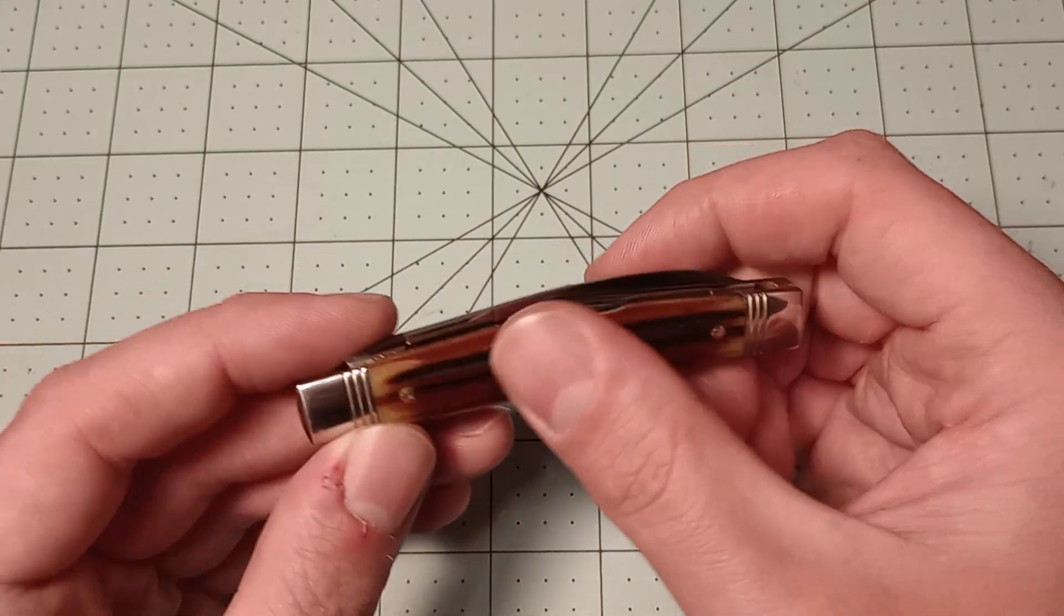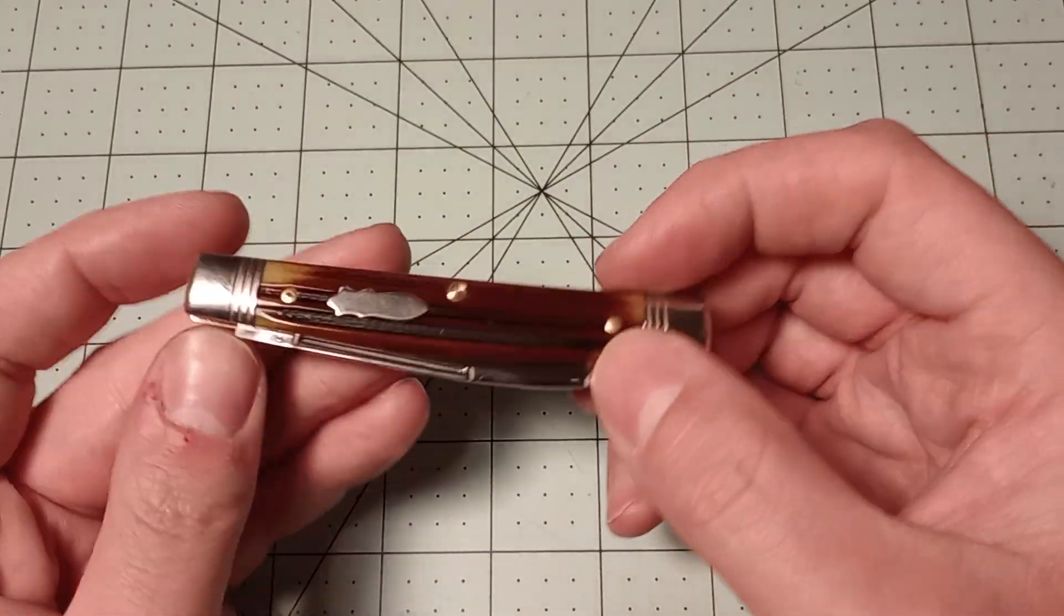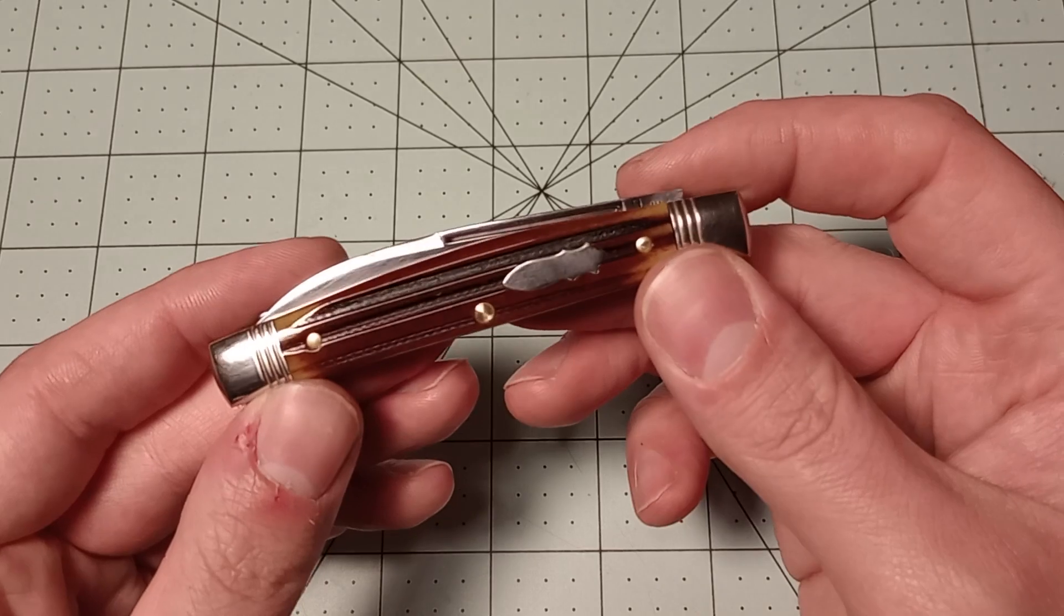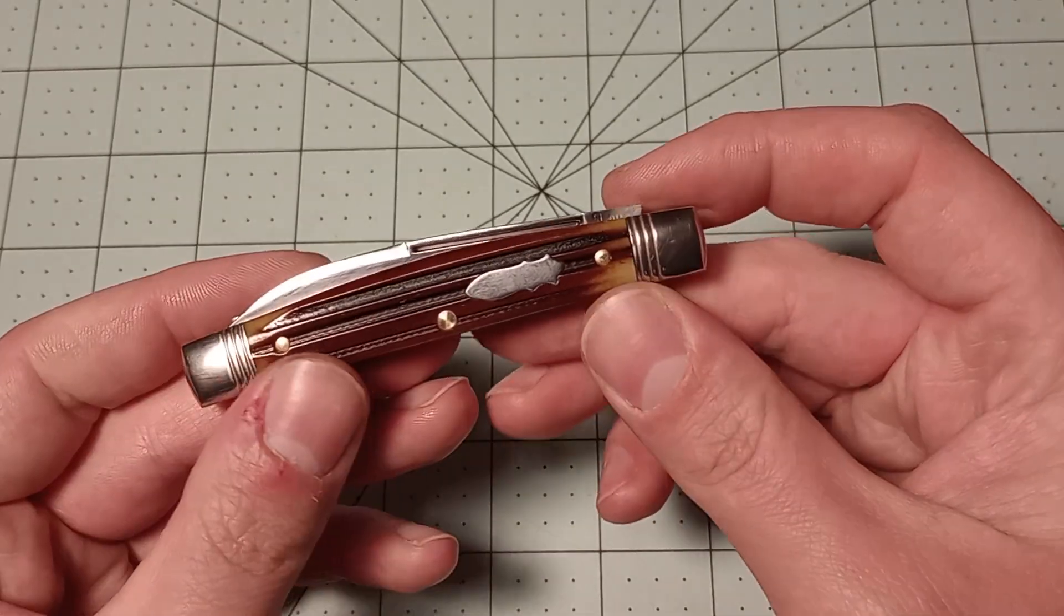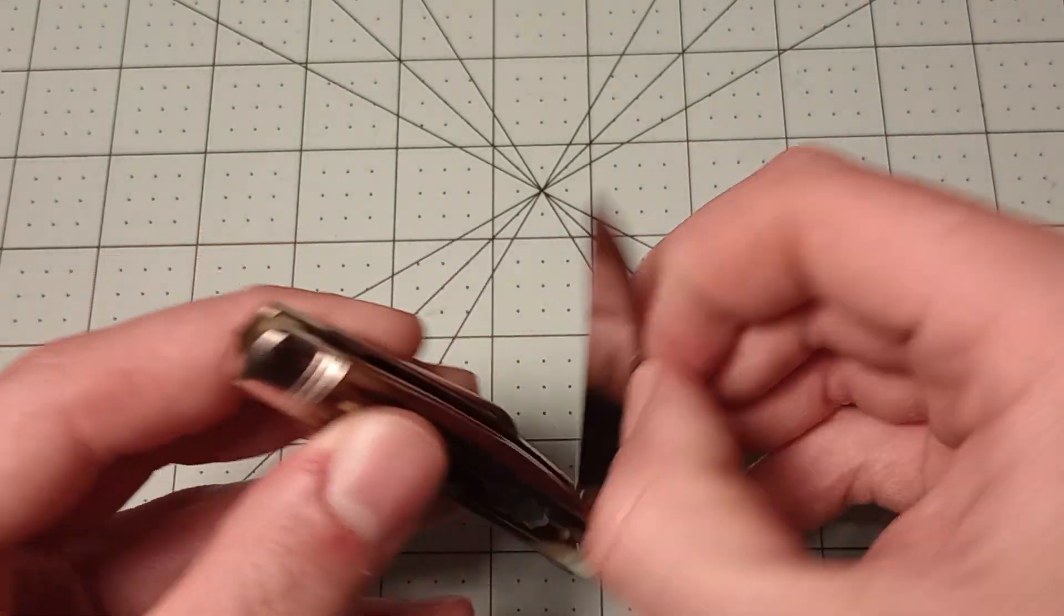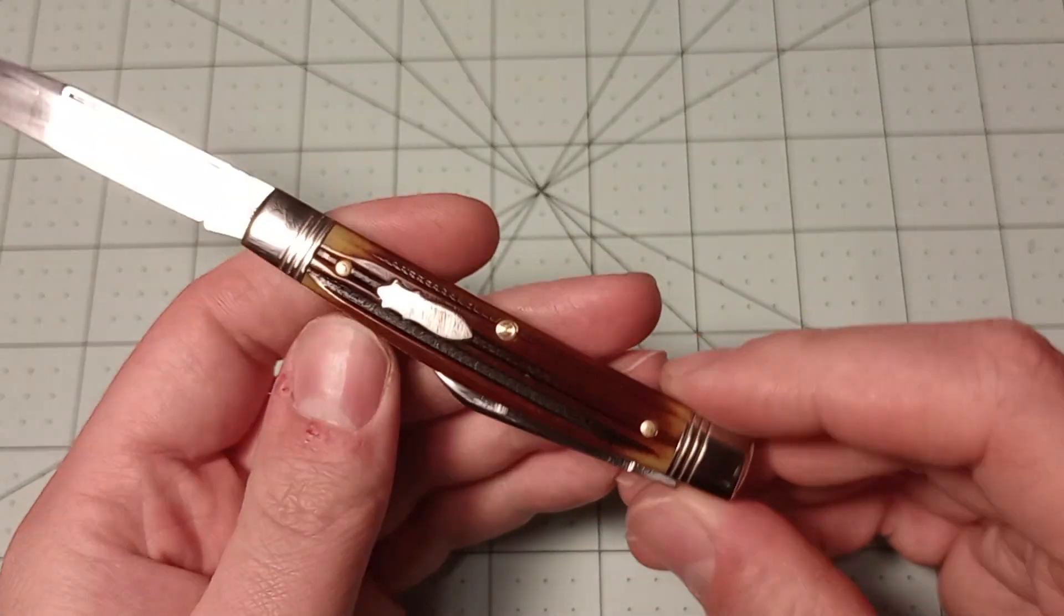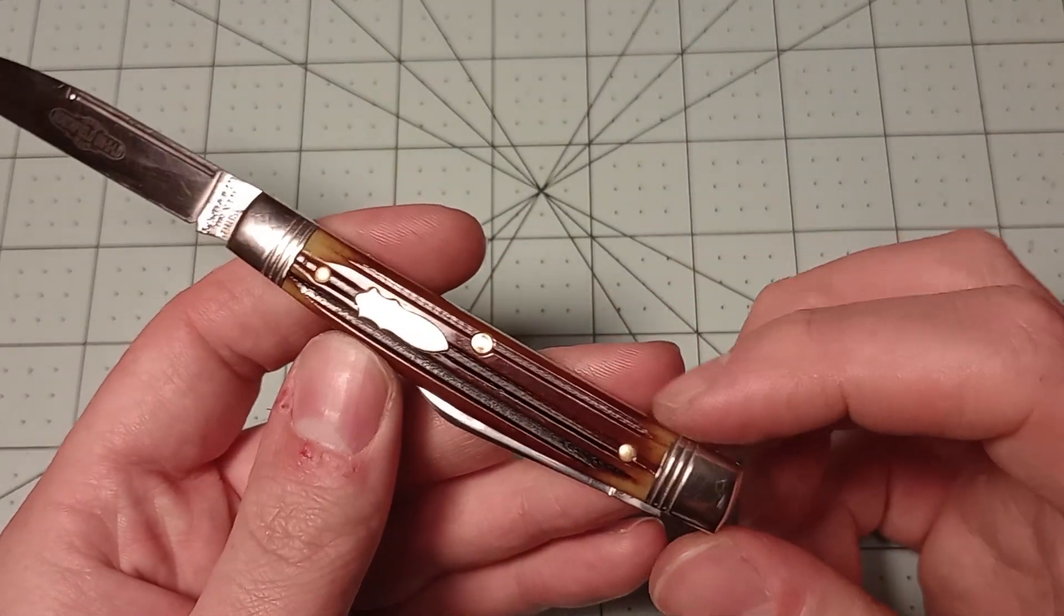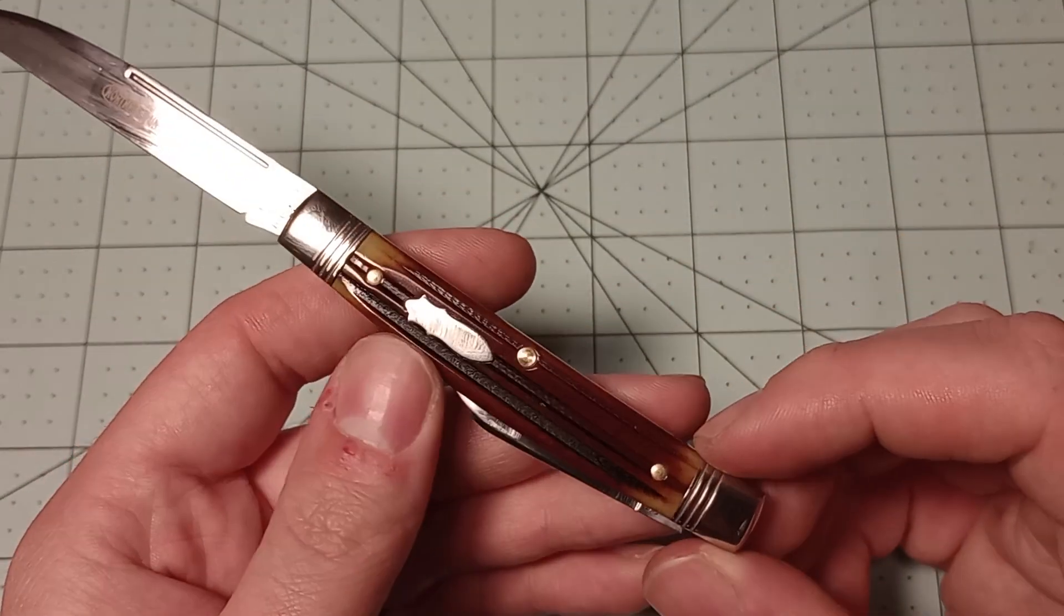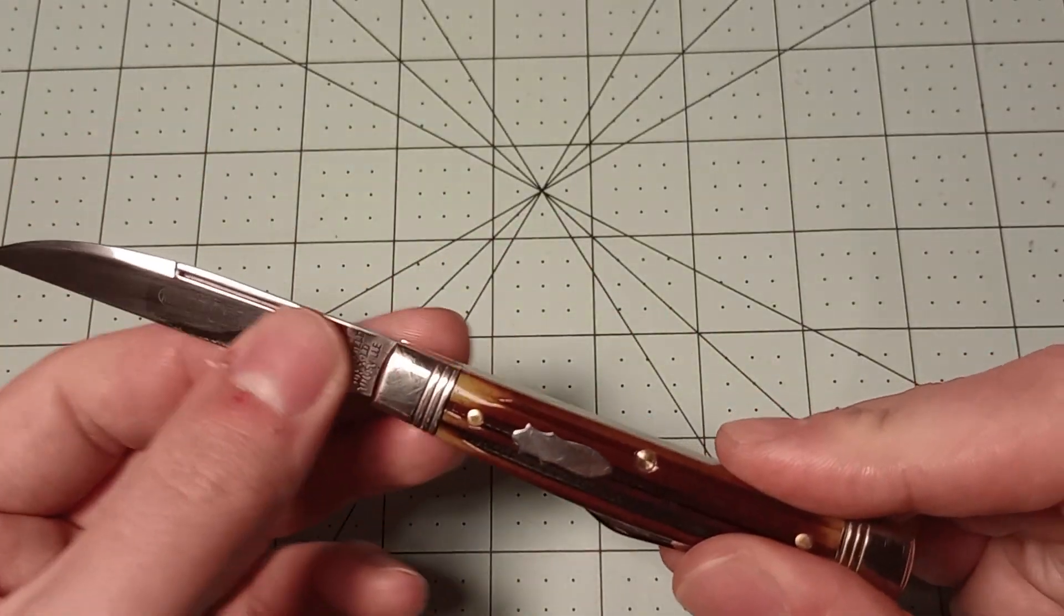Just because a lot of times some dye will come out of the bone and everything. But this is a good-looking knife. I like it. Reminds me a little bit of winter bottom bone that they did on queen knives and stuff back in the day. So I like that.